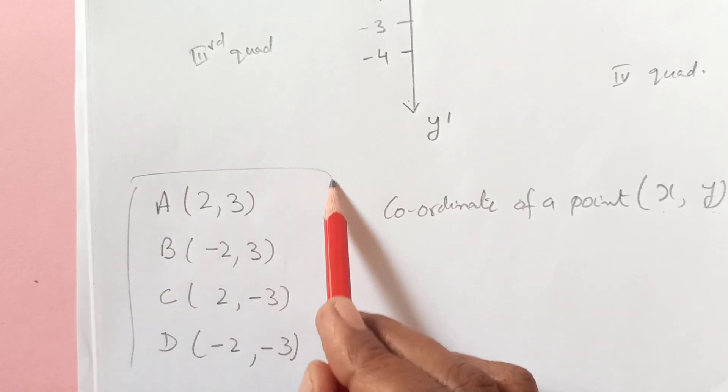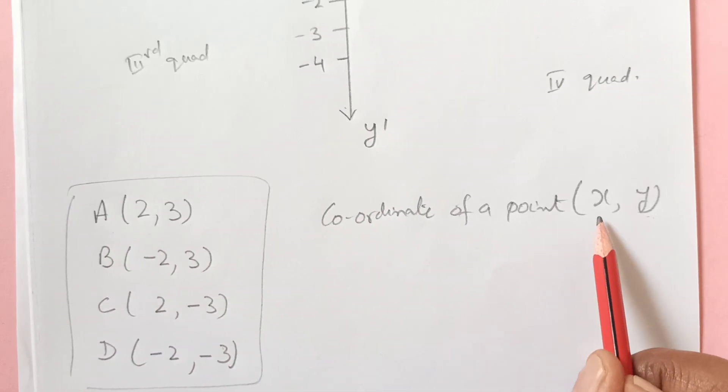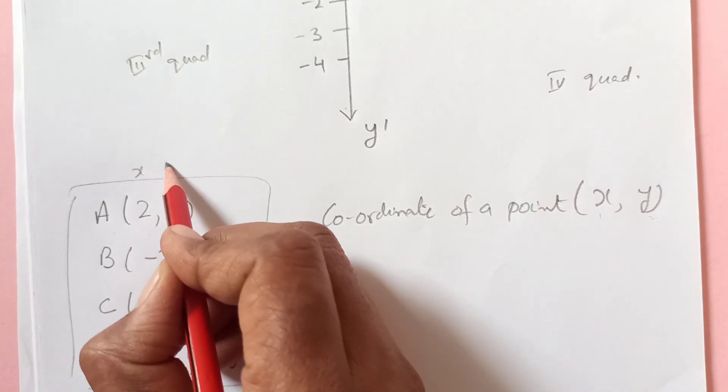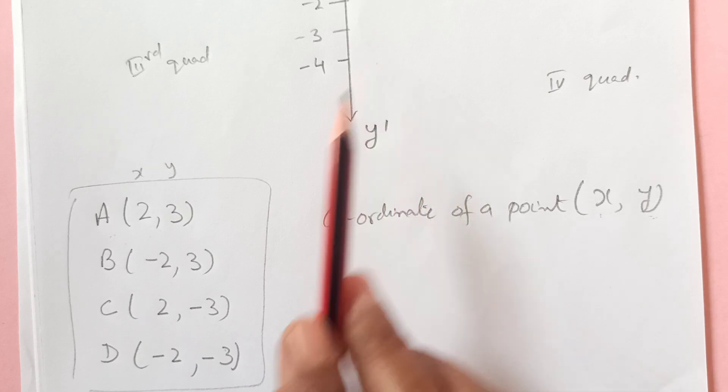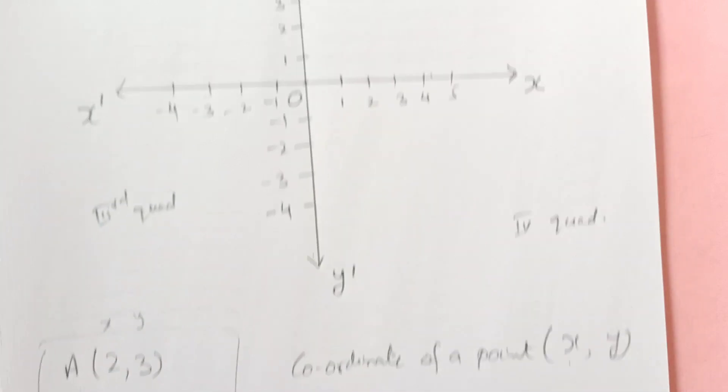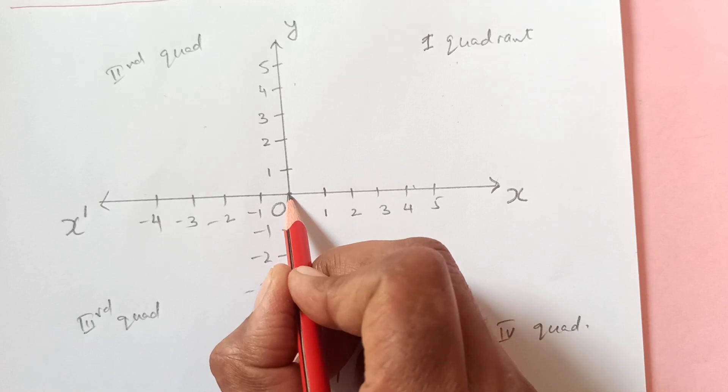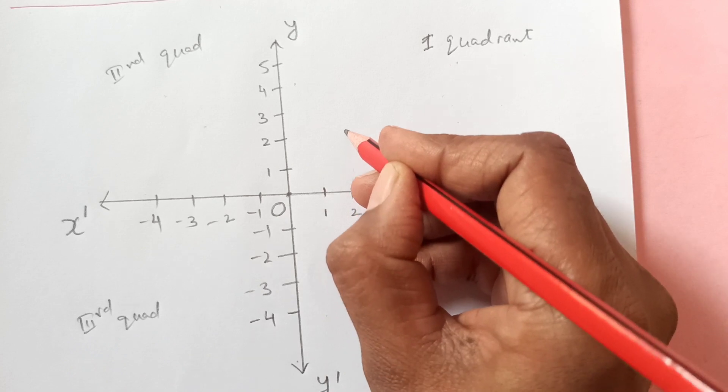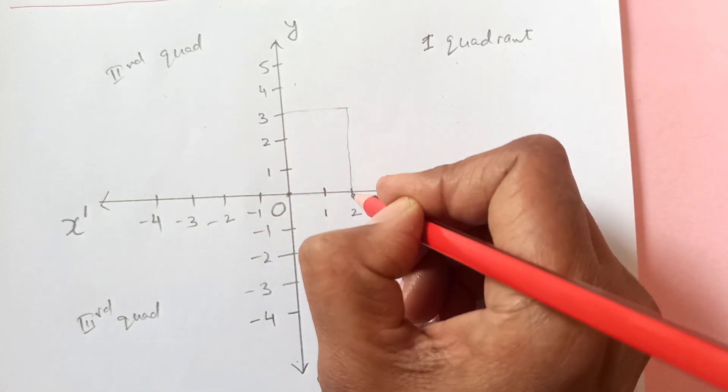So we have these four points here I have taken. A is (2, 3). As I told you the first one is x and the second one is y. So now for point A to locate on the coordinate axis, we have 2 and 3. x is 2 and y is 3. You start from the origin and then go along x, this is 2, then go up there. You see this one is here 3 and this side we have 2.